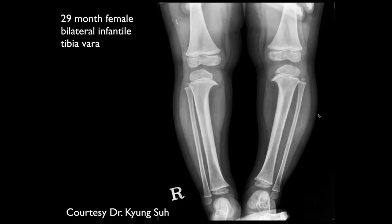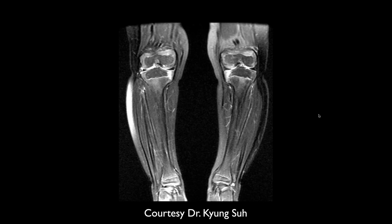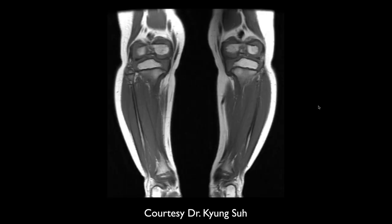Here's the first case for today: a 29-month-old female with bilateral infantile tibia vera. We see hooked processes along the inner metaphyses of the bilateral tibias. This is Blount's disease, where you get premature closure, abnormal growth, and tibia vera.